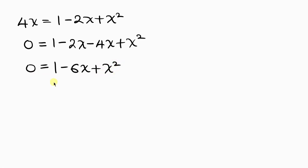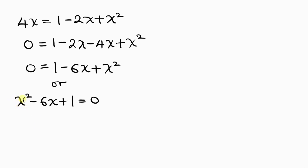This is the same as x squared minus 6x plus 1 equals 0. I'm going to use completing the square to solve this, since this quadratic cannot be factorized. I choose completing the square because the coefficient of x squared is 1 and the coefficient of x is an even number. I'll take the coefficient of x, which is negative 6, divide it by 2 and square the result.